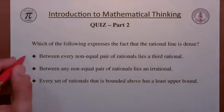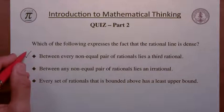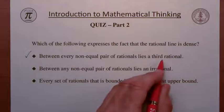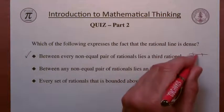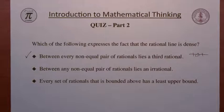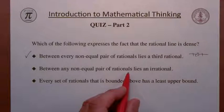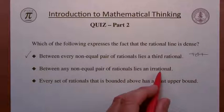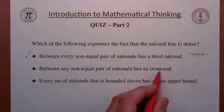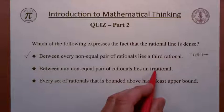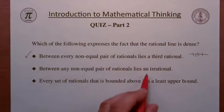The answer is the first one is correct. This is what it means to say that the rational line is dense. Between any two rationals, you can find a third one. The second one is actually true, but it doesn't express density, because whether or not there is an irrational number between two rationals is irrelevant. The question is about the rational line being dense — that statement is about the real line.